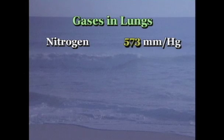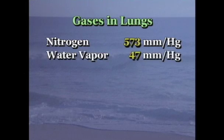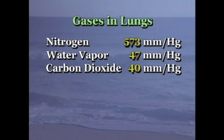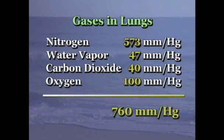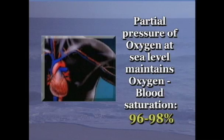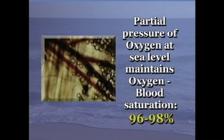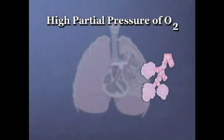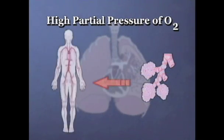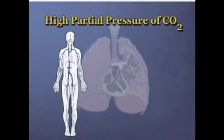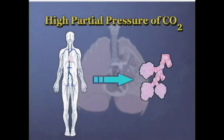Nitrogen: 573 mmHg. Water vapor: 47 mmHg. Carbon dioxide: 40 mmHg. With the remainder being oxygen at approximately 100 mmHg. The partial pressure of oxygen at this level maintains an oxygen blood saturation of approximately 96 to 98%. The high partial pressure of oxygen diffuses through the air sac wall into the blood. Under the same principle, carbon dioxide diffuses from the blood into the alveoli.